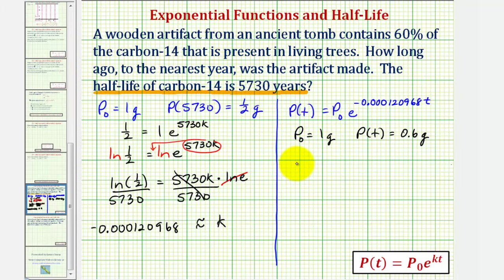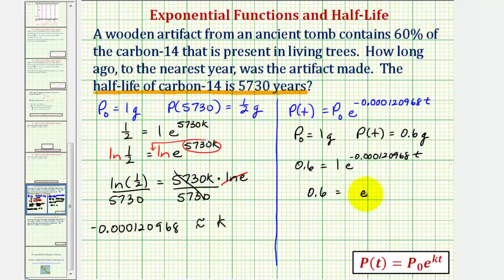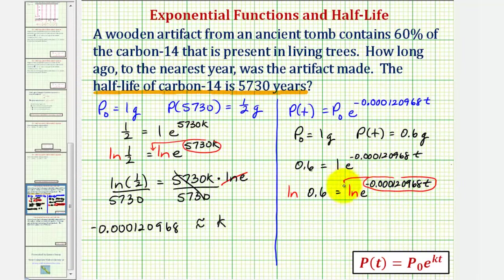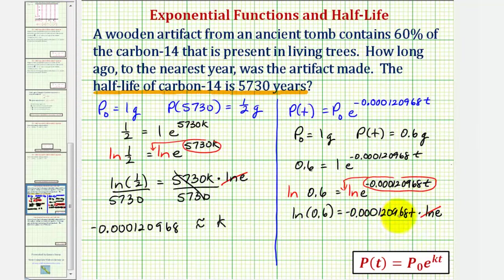Our equation is 0.6 equals one times e raised to the power of negative 0.000120968 times t. We can drop the one. To solve for t, we take the natural log of both sides. On the right side, we apply the power property of logarithms and write the exponent as a product with natural log e. So we have natural log 0.6 equals negative 0.000120968 times t times natural log e. Since natural log e equals one, we divide both sides by the coefficient of t.